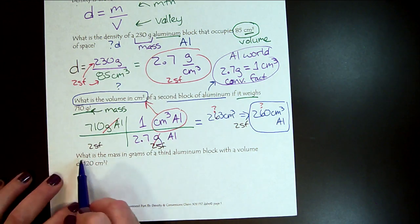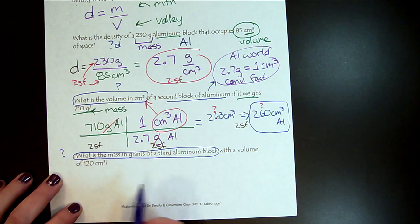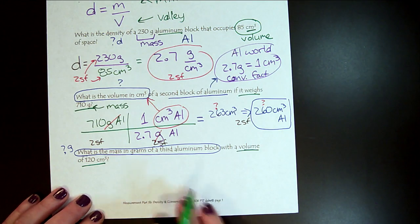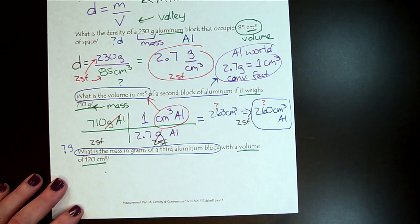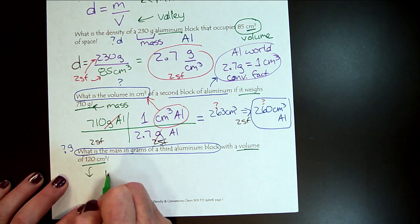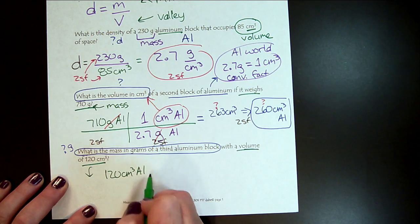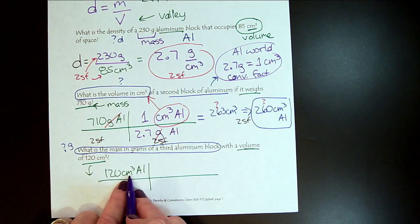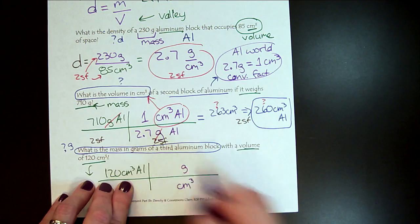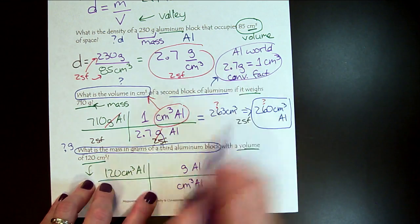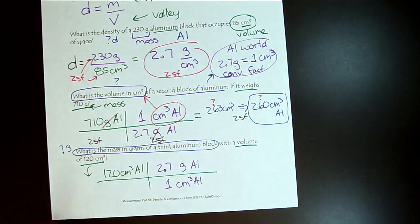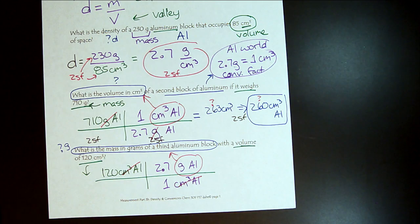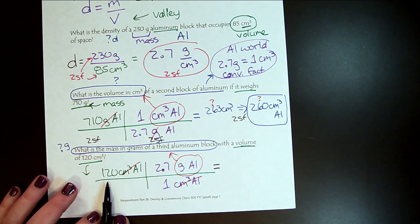Now let's do one last example. So now we want to find the mass of a third block of aluminum, and we're going to find that in grams. And this time we are given the volume as 120 centimeters cubed. So once again mass and volume, it's got to be density. So this time we start with what we're given. We know we have 120 centimeters cubed of aluminum, and we want to get to mass. So once again we're going to use our density conversion factor, but this time we have centimeters cubed on the top, so we'll put centimeters cubed on the bottom and grams on the top. And centimeters cubed has a 1, and grams has a 2.7. So this time we're getting rid of the centimeters cubed, and we're going to grams, which is what the question asked for. So now we can go ahead and punch this into our calculator. 120 times 2.7, and we're going to get 324 grams.